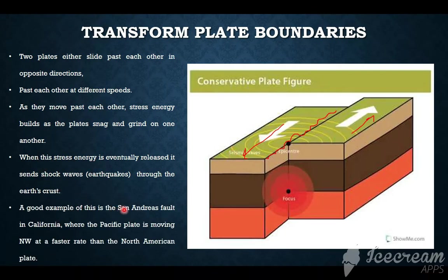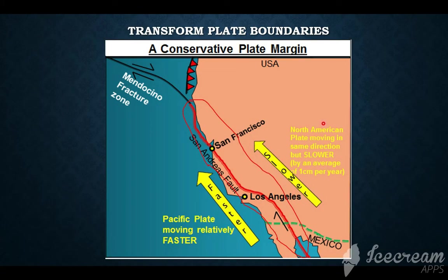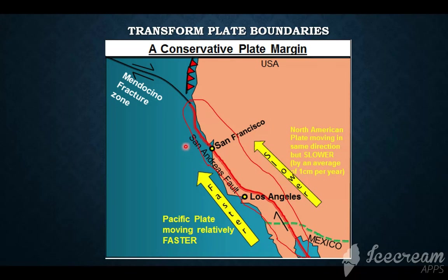A good example is the San Andreas Fault in California, where the Pacific Plate is moving northwest at a faster rate than the North American Plate. A transform plate boundary is also known as a conservative plate margin. The North American plate and the Pacific plate are moving at different speeds — the Pacific plate moves faster while the continental plate moves slower — and this creates a drag and snag effect.